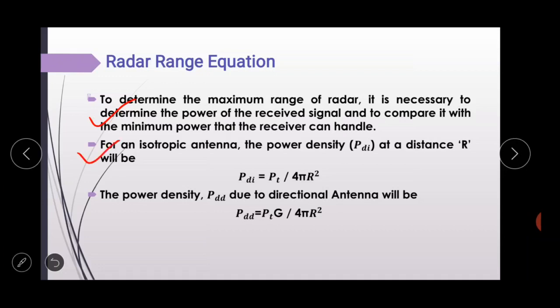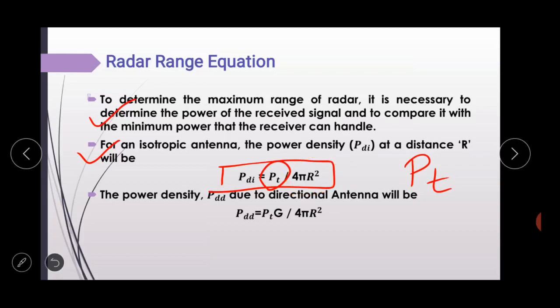First, we assume an isotropic antenna. For an isotropic antenna with transmitted power PT, the power density at the target at a distance R is given by PDI = PT / 4πR², where PT is the transmitted power and 4πR² is the surface area of the sphere at distance R.